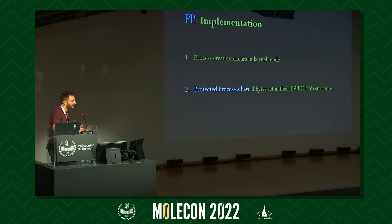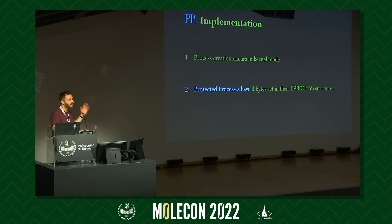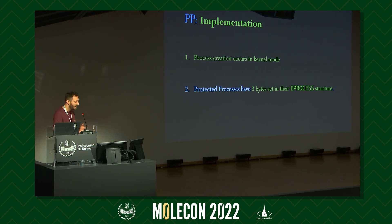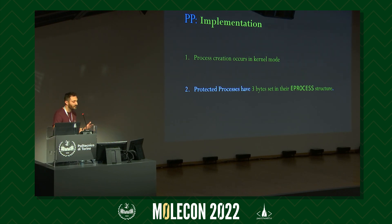At the kernel level, protected process support works in two ways. First, the entire bulk of process creation happens in kernel mode only, to prevent injection attacks. Second, protected process is implemented in kernel via a structure called EPROCESS, which modifies the behavior of the process manager. When you request access to a protected process, certain access rights will be denied — again, to prevent injection or any other modification to a protected process.